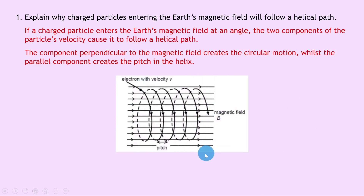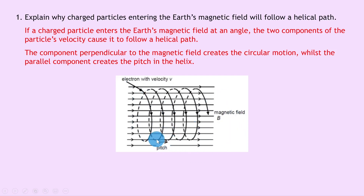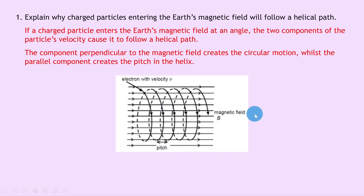The parallel component, which is v cos theta, creates the pitch in the helix. To sketch an example: we've got the magnetic field direction going to the right, and the electron with a velocity vector coming in at an angle to this magnetic field, causing helical motion. The pitch is the distance between two adjacent loops, with v sine theta causing circular motion and v cos theta causing the pitch.